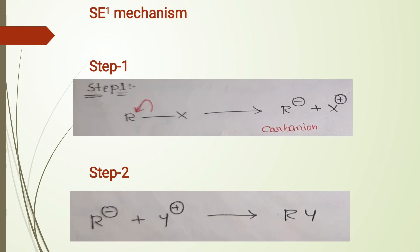The first one is SE1 Mechanism. SE1 stands for Unimolecular Electrophilic Substitution. Unimolecular refers to the fact that the rate of reaction depends only on the concentration of the substrate. The rate-determining step depends only on the concentration of the substrate and not on the reagent. So, this is referred to as SE1 Mechanism.